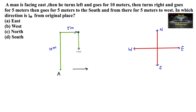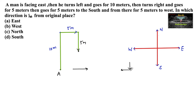He moves 5 meters to the south. Then from there, 5 meters to the west. He is facing south and then takes 5 meters to the west, which means he is taking a right turn towards the west direction — again 5 meters.